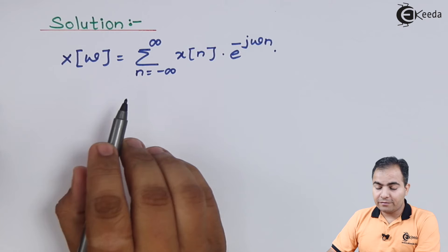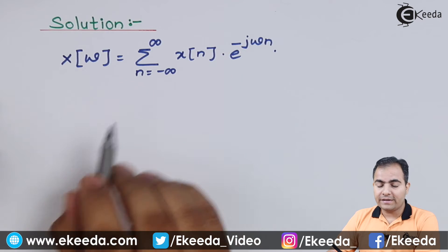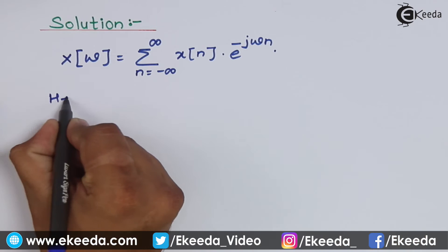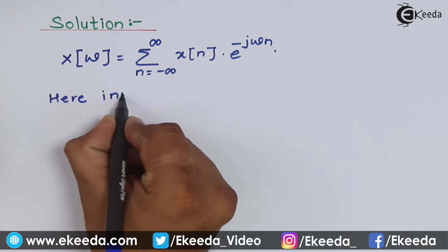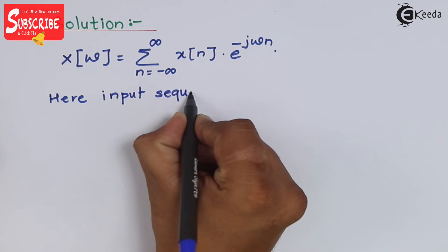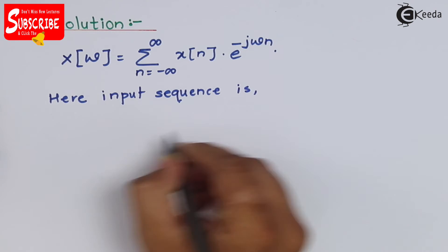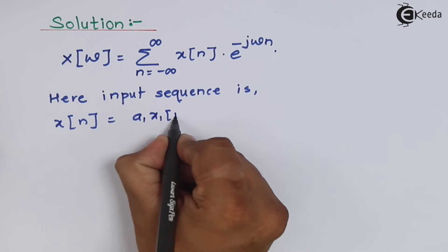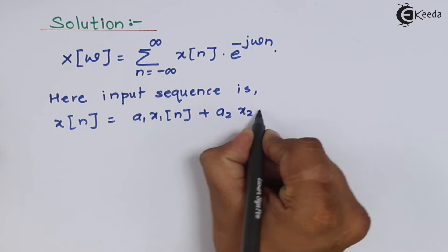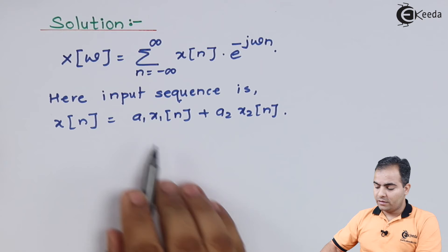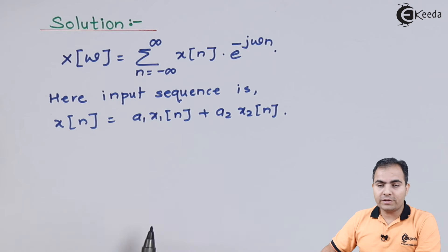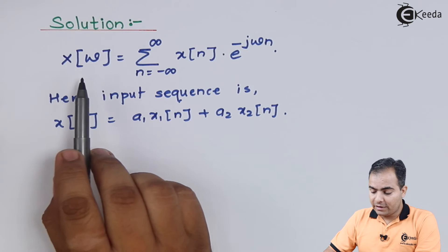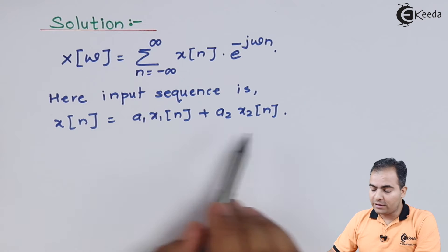Now what I am going to do, if my input is a1·x1[n] + a2·x2[n], then this was my input signal or input sequence. And now we are going to calculate or find out the DTFT of this sequence.